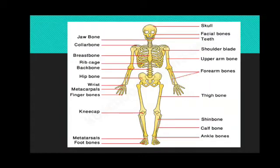Bone is one of the hardest substances in the human body. You know that when you were born you had around 270 bones, but as you grow, some of these bones fuse together. The skeleton of an adult human has 206 bones.